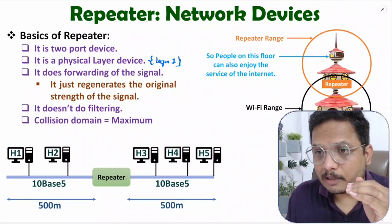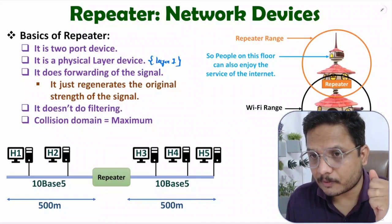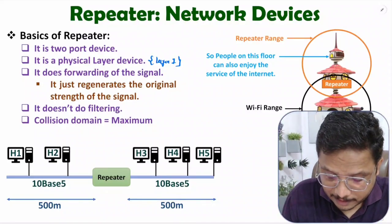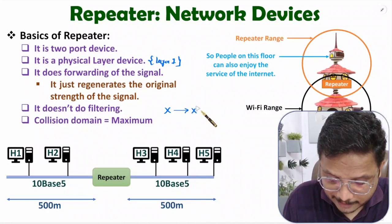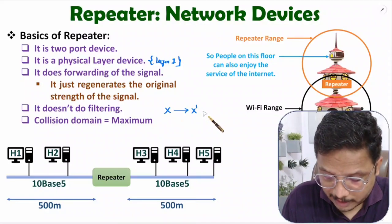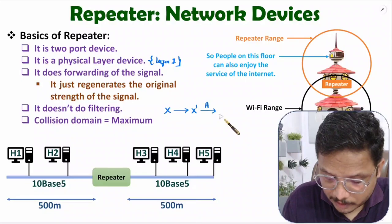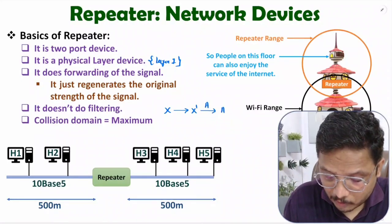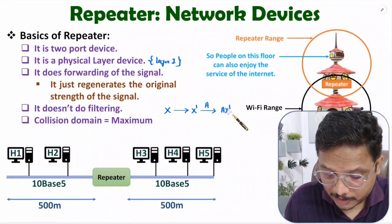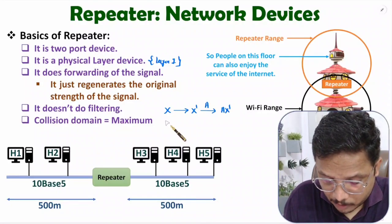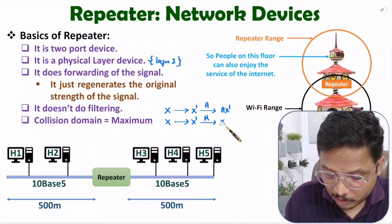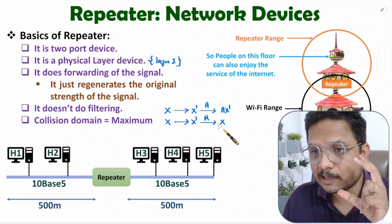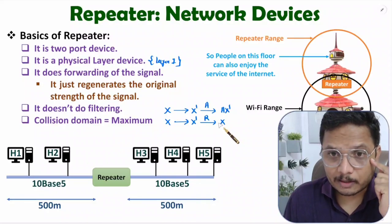There is a difference between regeneration of signal and amplification. For example, if the original signal is X and after some distance it becomes X' (which is lower than X), then in amplification you multiply an amplification factor A by X', giving output A × X'. But in regeneration with a repeater, even though the signal degrades to X', the repeater regenerates the original strength X again. That is the basic difference between a repeater and an amplifier.